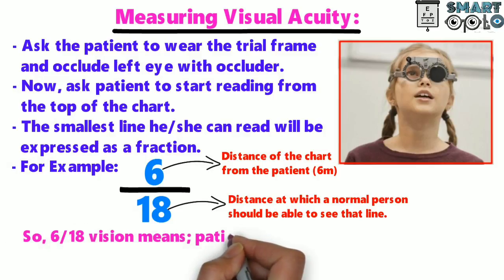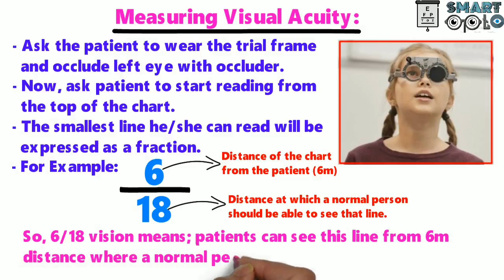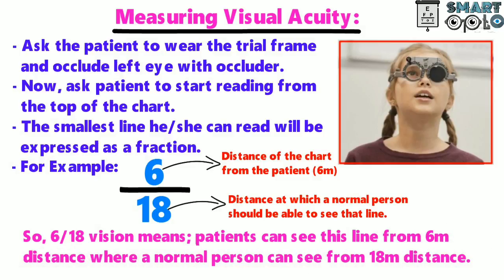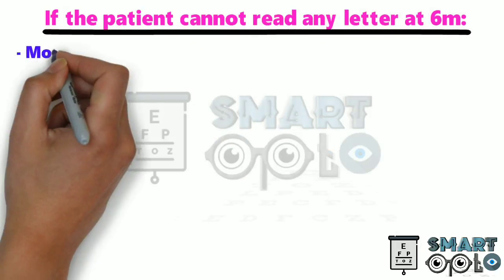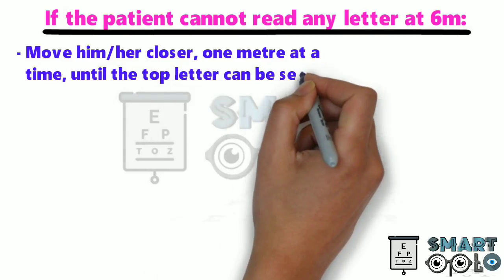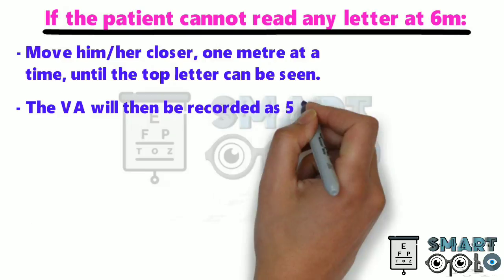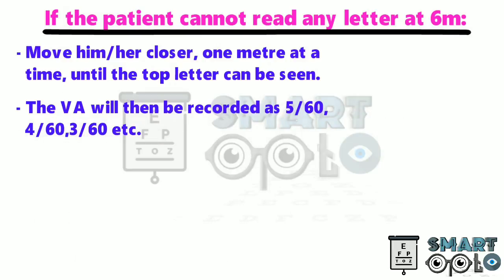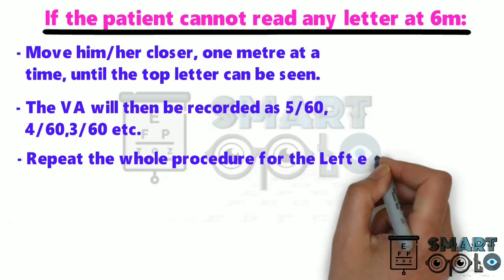So 6/18 vision means the patient can see this line from 6 meters distance, where a normal person can see from 18 meters distance. If the patient cannot read any letters at 6 meters, move him or her closer one meter at a time until the top letter can be seen. The visual acuity will then be recorded as 5/60, 4/60, 3/60, etc. Repeat the whole procedure for the left eye.